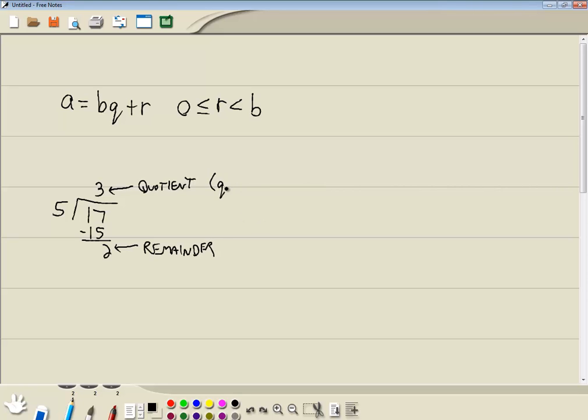So if you think of the quotient as our Q and the remainder as our R, then for my number example, I can rewrite it in this manner. I'd have 17 is equal to 5 times 3 plus 2. A little bit different way of writing our answer than maybe you've seen in the past. But you see how they connect.